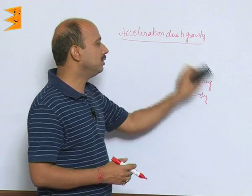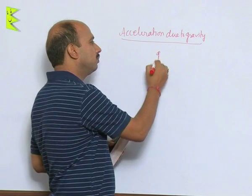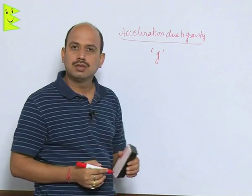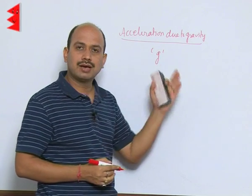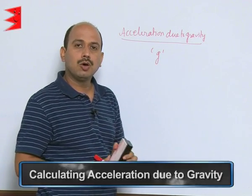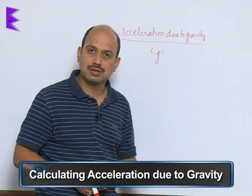Acceleration due to gravity is represented by small g, the symbol we use always for the acceleration due to gravity. Now we will do how do we calculate acceleration due to gravity.